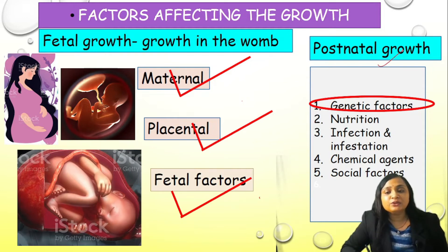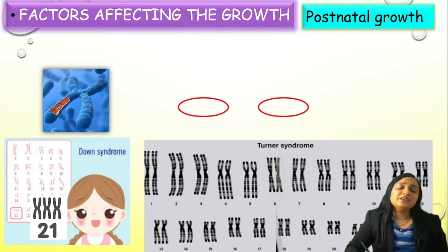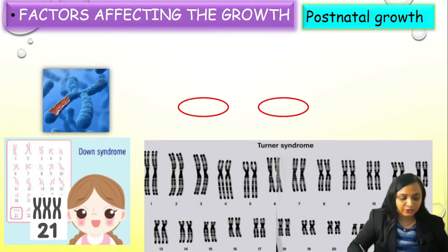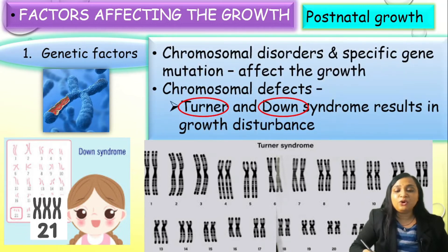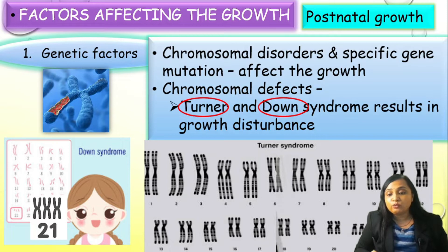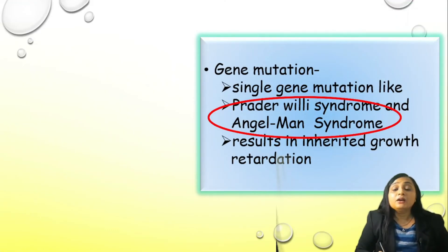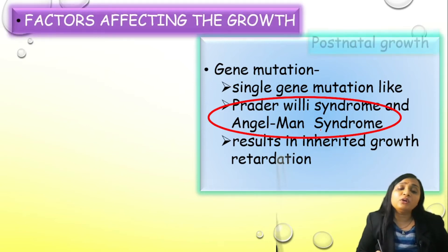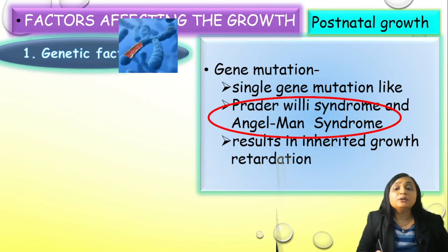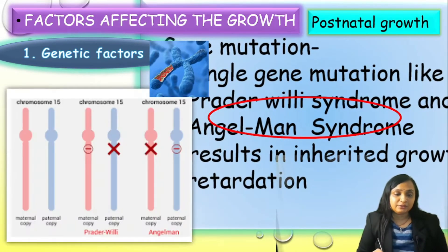Let us move to postnatal growth factors. First is the genetic factor. Genetic constitution is very important for growth. If the child is not having a proper genetic constitution — like if she is having XO (one chromosome missing) as in Turner syndrome, or extra chromosome like trisomy 21 — it will result in many growth disturbances. Single gene mutations like Prader-Willi or Angelman syndrome may also have an effect on postnatal growth.